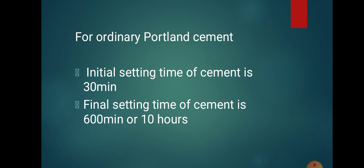For ordinary Portland cement (OPC), the initial setting time is a minimum of 30 minutes, whereas the final setting time is a maximum of 600 minutes or 10 hours. So the initial setting time of OPC is minimum 30 minutes and the final setting time of OPC is maximum 600 minutes or 10 hours.